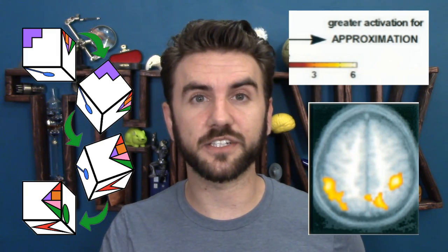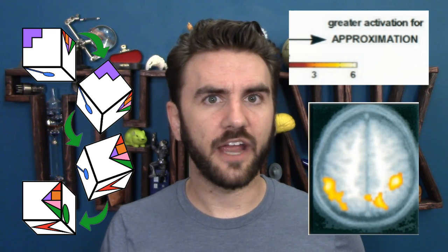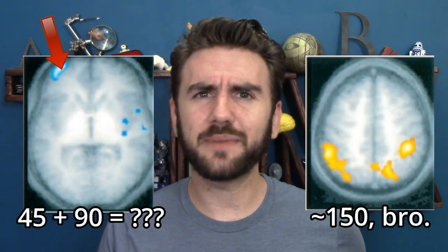On the other hand, if we're trying to approximate numeric answers, we use areas normally reserved for spatial reasoning and visualization — like figuring out what an object would look like if it were upside down — areas which have very little to do with language. In fact, case studies of people with brain damage show just how distinct these processes are. You can get a lesion in one area that totally destroys your ability to process numbers precisely, but your ability to estimate answers remains totally unharmed. All of this is at least suggestive that there are two distinct systems at play when we're working with math problems.